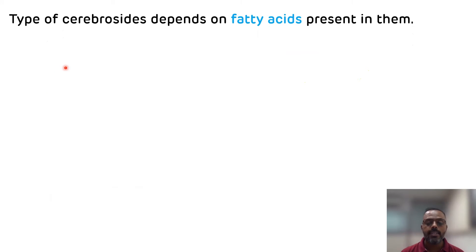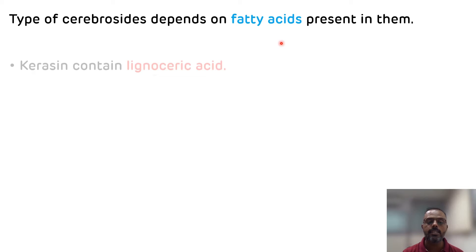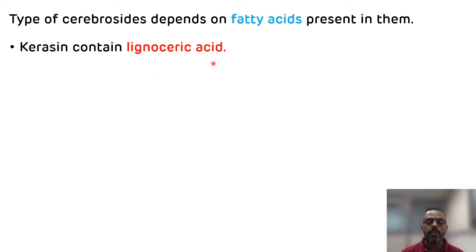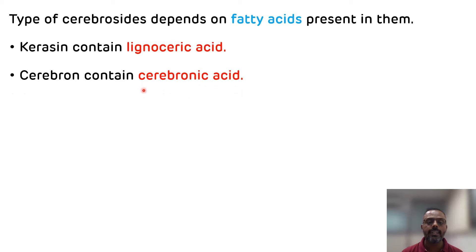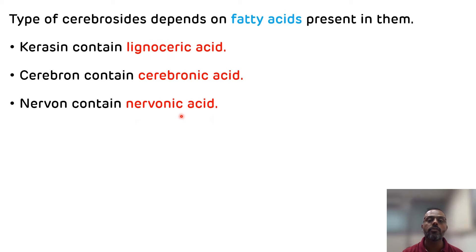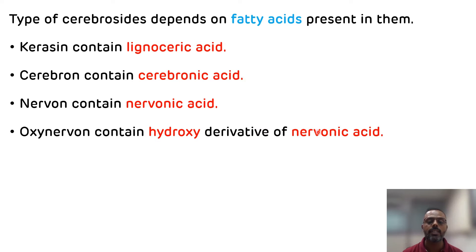Cerebrosides are further classified depending upon the type of fatty acids present in them. The first is kerasin, which contains lignoceric acid. The second is cerebron, which contains cerebronic acid. The third is nervon, which contains nervonic acid. The fourth is oxynervon, which contains a hydroxy derivative of nervonic acid.